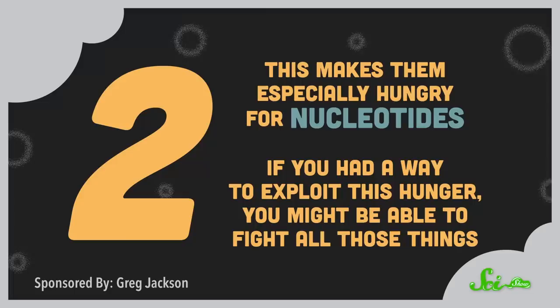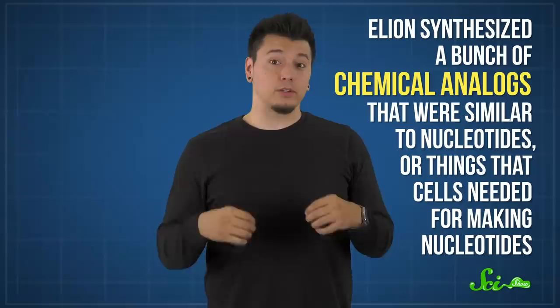The problem was, nobody knew much of anything about how cells make or use nucleotides. One of Elion's first assignments at her new job was to start figuring all of this out. So she synthesized a bunch of chemical analogs that were similar to nucleotides, or things that cells needed for making nucleotides. The idea was to see what cells would do with these imposter compounds.